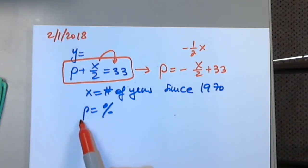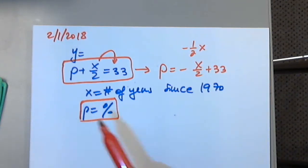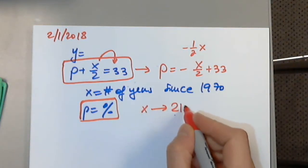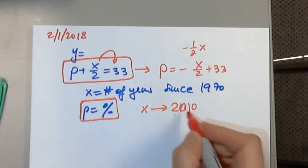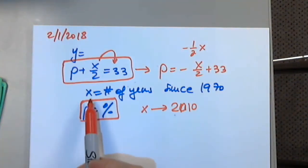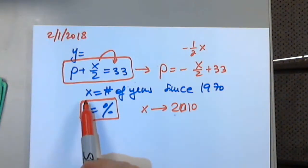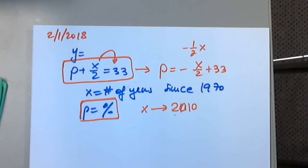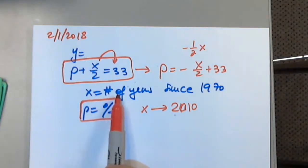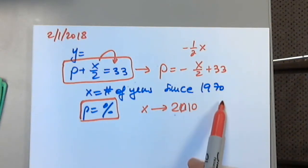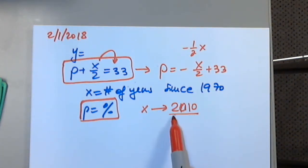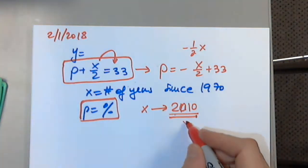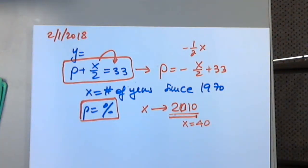We're asked to find the percentage when x represents 2010. We have to read very carefully. It says that x is the number of years since 1970, so when we're looking at 2010, x is 40. So I have to plug in x equals 40 into this particular linear equation.